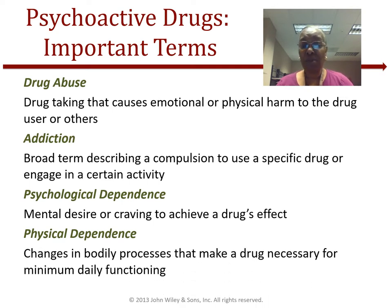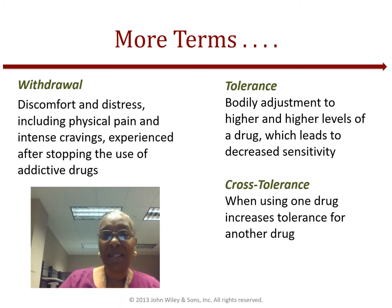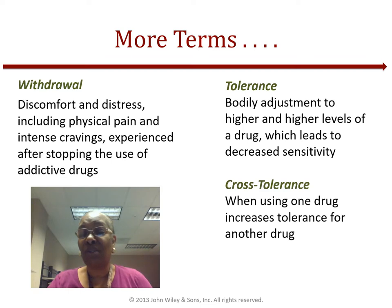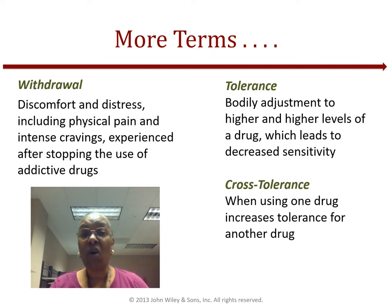Physical dependence means your body has adapted to taking the drug and will need the same amount to continue functioning. Tolerance leads many users to escalate their drug use or experiment with other drugs in an attempt to recreate that original euphoric feeling. Developing tolerance or cross-tolerance doesn't prevent drugs from seriously damaging the brain, heart, liver, or other organs.